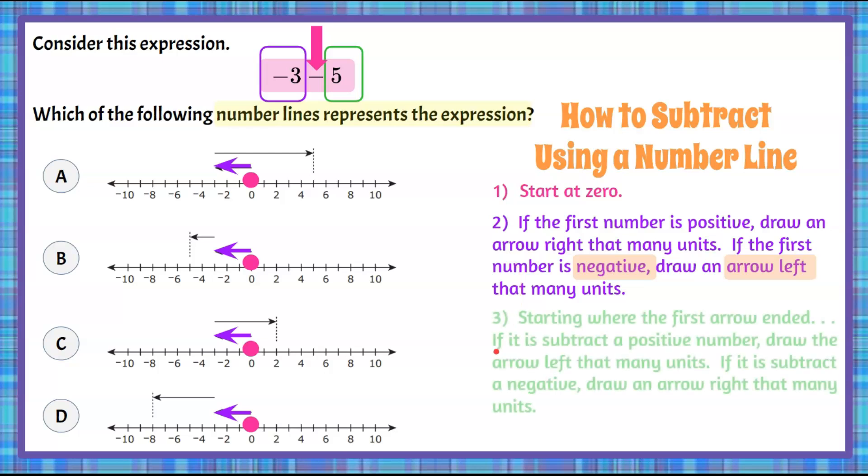Next step. Starting where the first arrow ended, if it is subtract a positive number, we're going to draw an arrow left that many units. If it is subtract a negative, we're going to draw an arrow right that many units. So when you subtract something, you're taking away, right? You learn that at a very young age. So we're going to go left five.